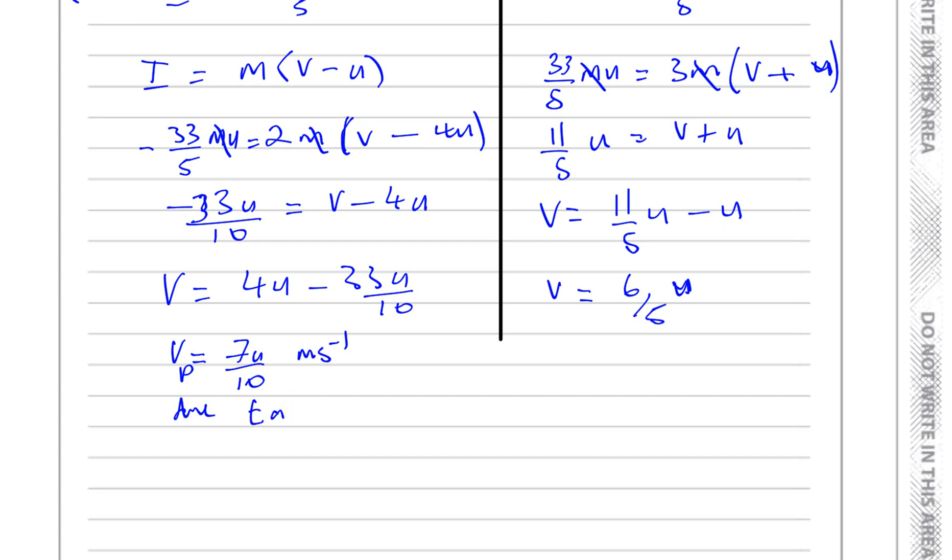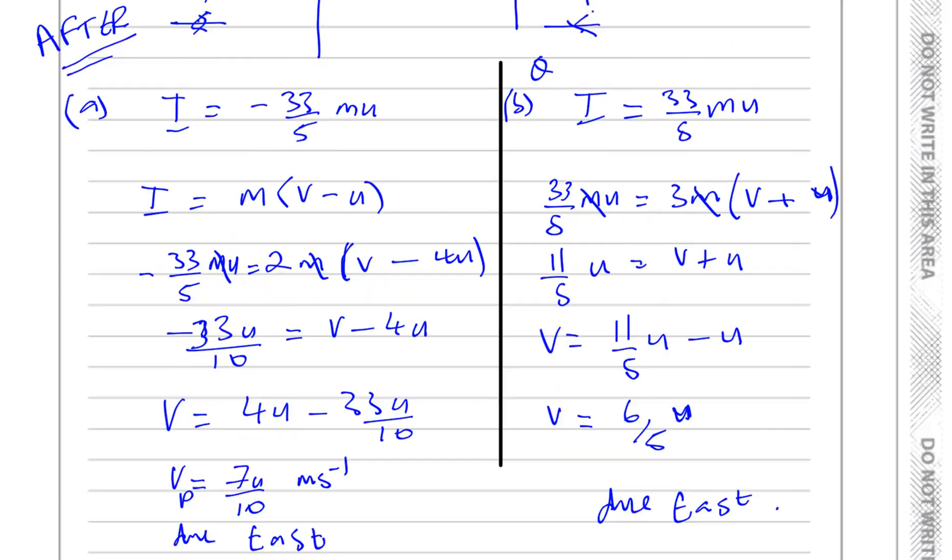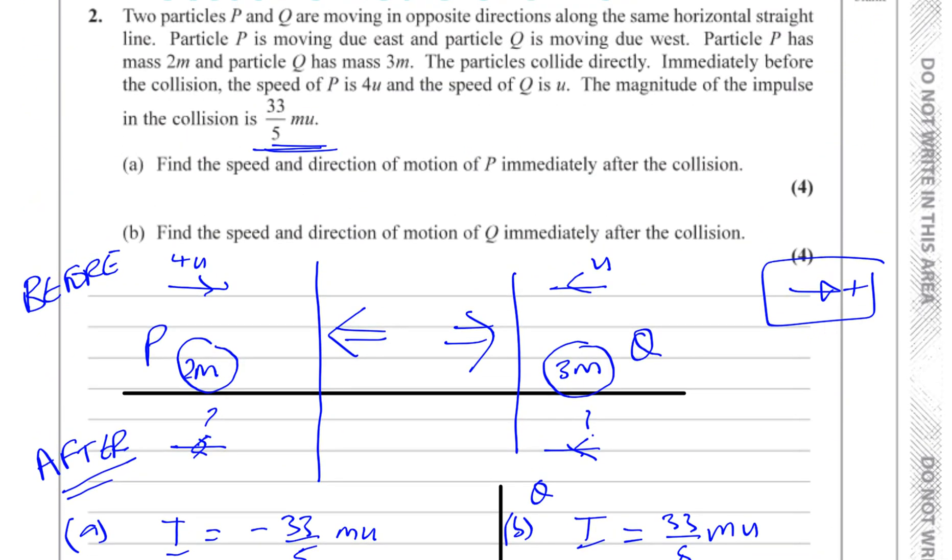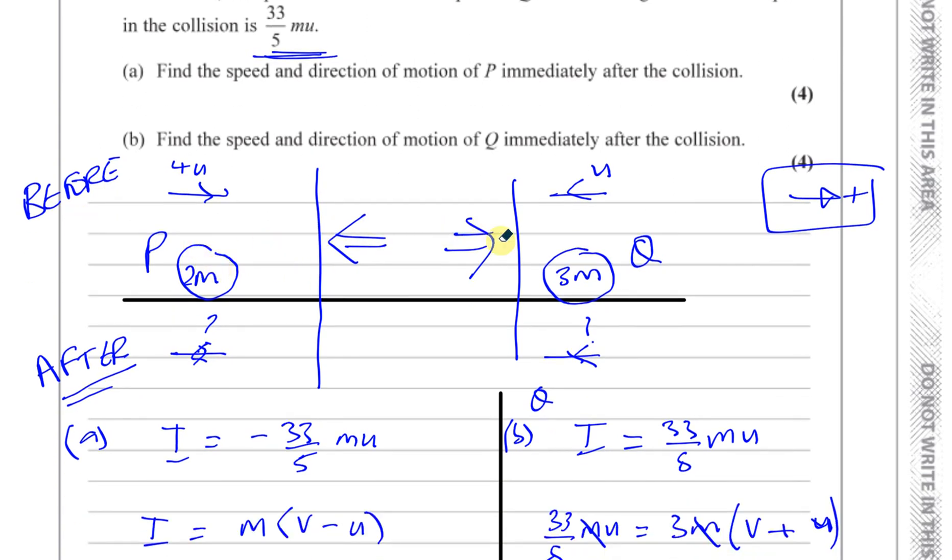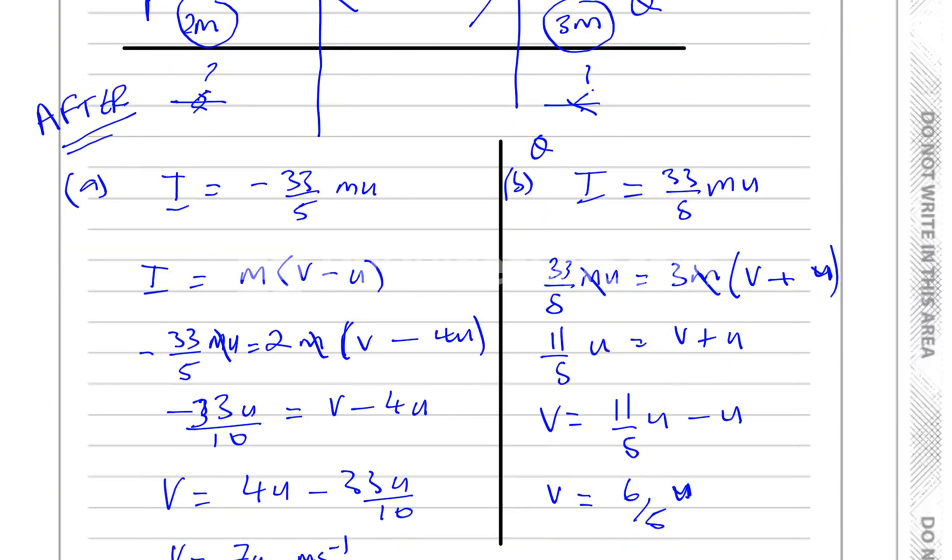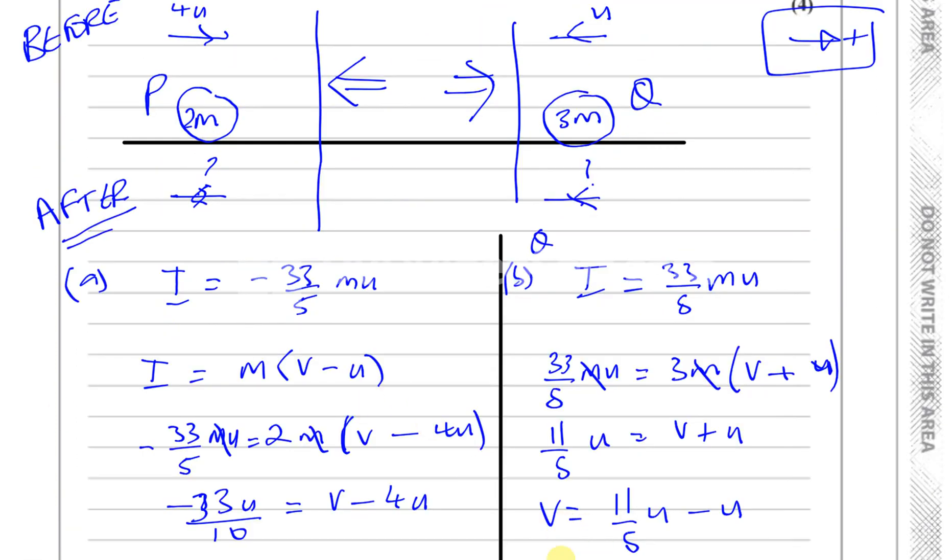Sorry about the bad writing at the end, but that's the answer to that question. Speed and direction of motion. They're both going to be moving in the same direction that P was going. So they've hit each other and they haven't reversed directions. Q has reversed direction, but P is staying in the same direction as it was before. Both going due east. That's the answer to this question.